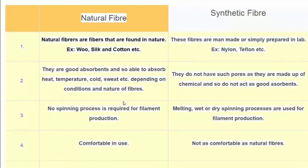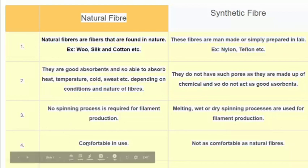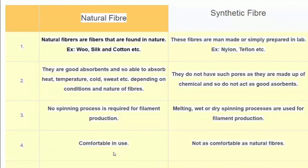In natural fibers, no spinning process is required for filament production. In synthetic fibers, melting, wet, and dry spinning processes are used for filament production. Basically, we can easily form natural fibers whereas synthetic fibers are lab-made, and therefore their absorbent property is not as strong. Natural fibers are comfortable in use whereas synthetic fibers are not as comfortable as natural fibers.